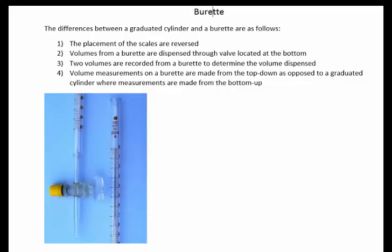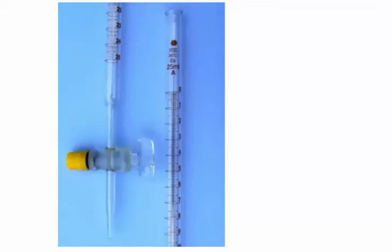And finally, I'll show you examples with a burette. The differences between a graduated cylinder and a burette are as follows: the placement of the scales are reversed.